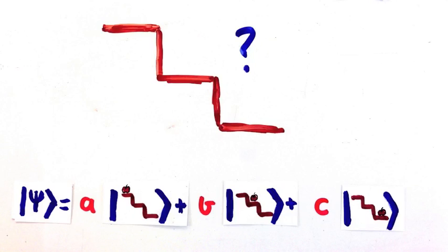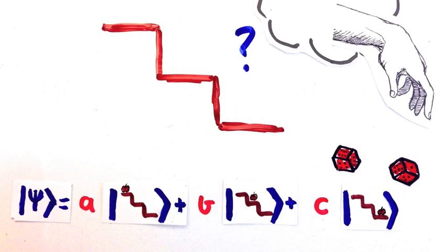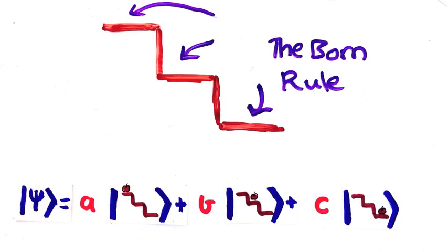Last time we said we can't predict exactly what will happen when we measure a quantum system, but the Born rule tells us how likely the possible outcomes are.